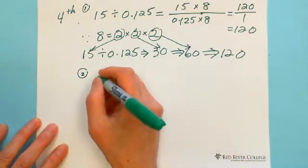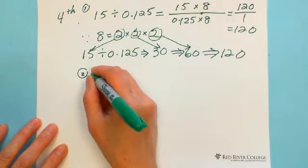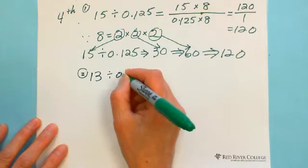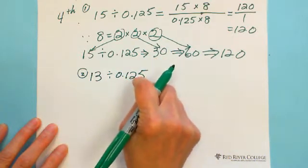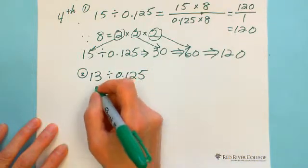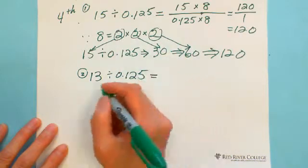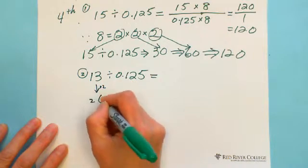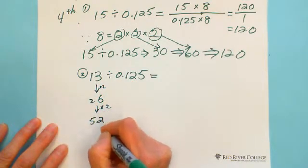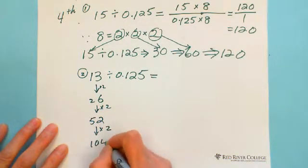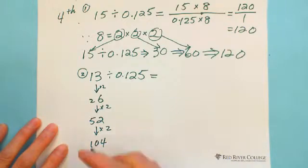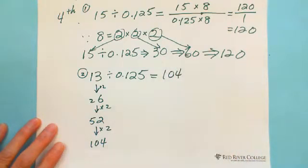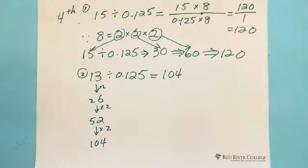Let's try another example: 13 divided by 0.125 equals multiplied by 8. Since 8 equals 2 times 2 times 2, just double three times. 13 doubles to 26, double again to get 52, double again to get 104. When you do this quickly, people will think you are a genius because you know the pattern: divided by 0.125 equals multiplied by 8.